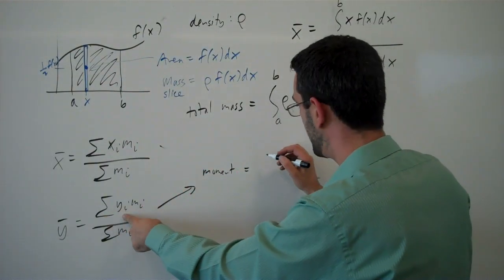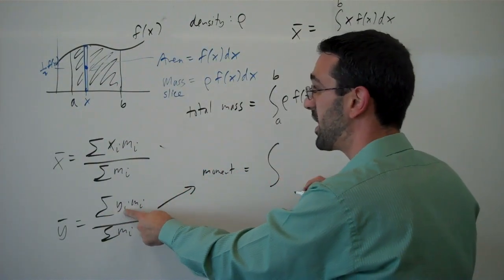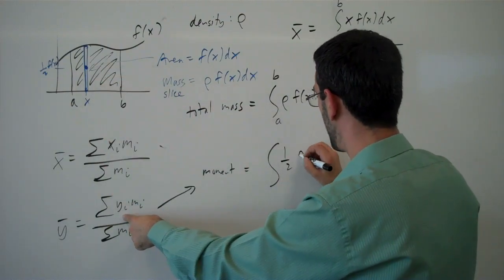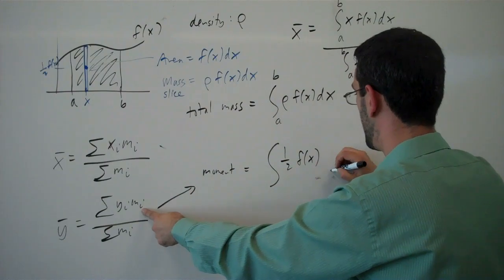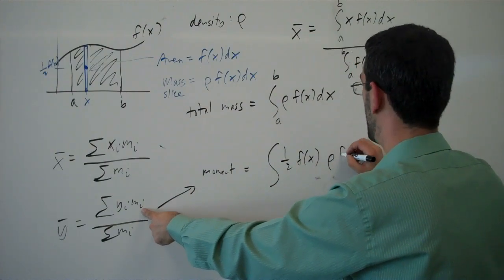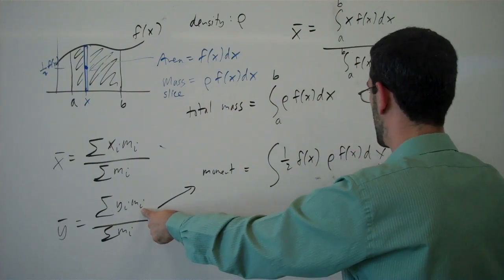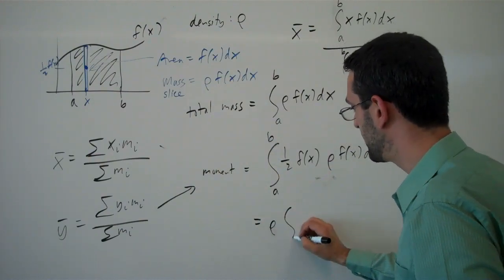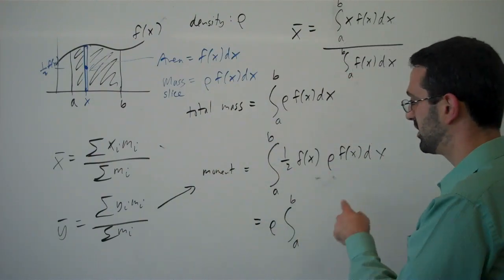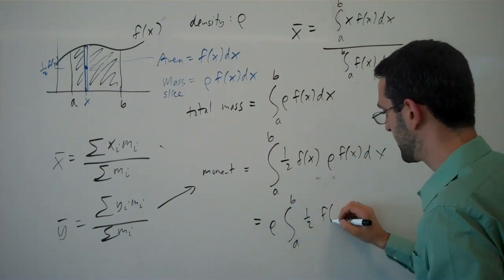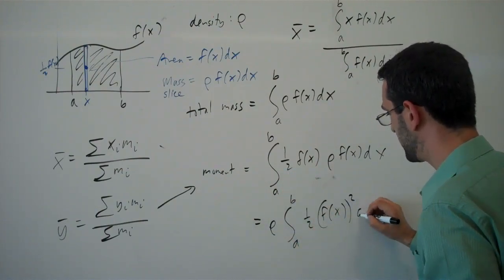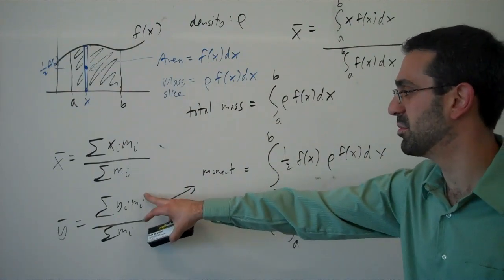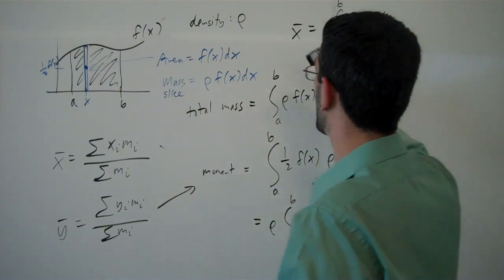So when we calculate here, the y value of this mass will be one half f of x. The mass will be rho times f of x dx, integrated from a to b, which we can simplify down to one half f of x squared dx as the moment for the moment about x for the y bar.